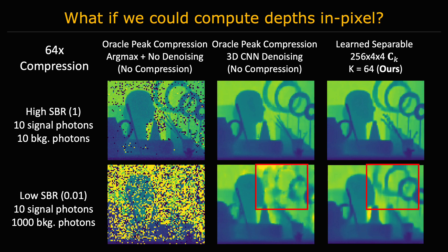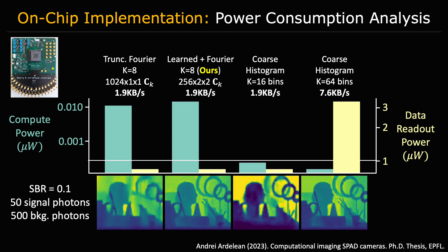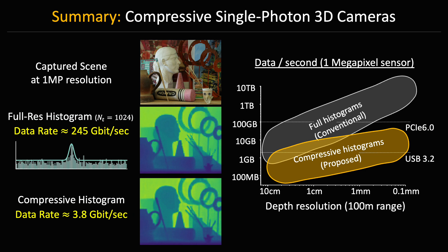We also analyzed the power consumption of an on-chip implementation. Although the compute power dissipated by a compressive histogram is higher than a conventional histogram, the overall power consumption is lower because data transmission consumes significantly more power than computation. To summarize, we proposed a framework for compressing single photon data in an online fashion, which is able to reduce data rates by up to two orders of magnitude.